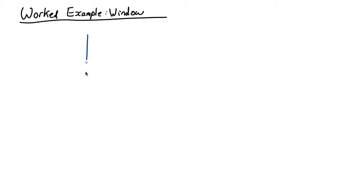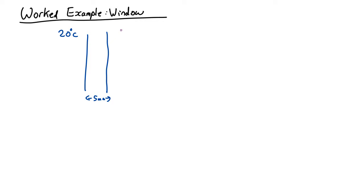So let's imagine we have a window with a total cross-sectional area of one square meter, five millimeters thick, and the temperature on the inside of the window is twenty degrees centigrade and the outside zero degrees centigrade, and we'll assume it's a bit windy outside.